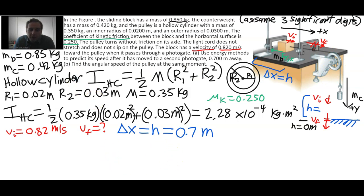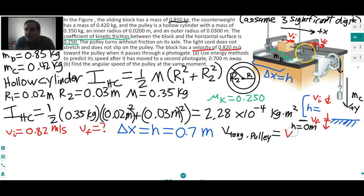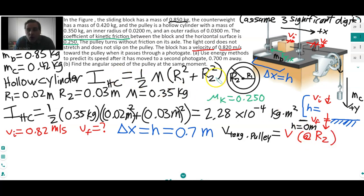One more thing about the pulley: the tangential velocity on the edge of the pulley is the same as the linear velocity of the cord, which equals the linear velocity of the block and counterweight. So v_tangential = v_linear, and this occurs at R2, the outer radius of the annular ring. Let's now get into our energy methods and think carefully about all the terms.